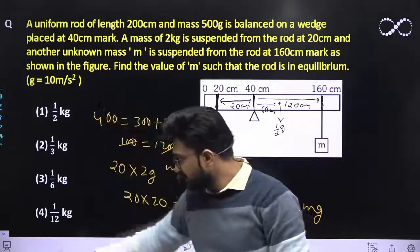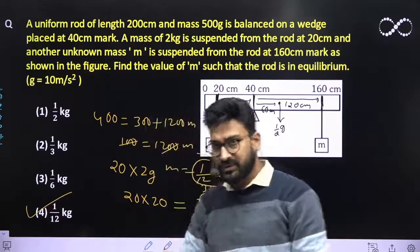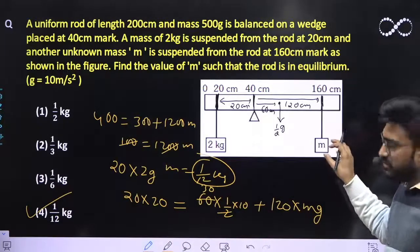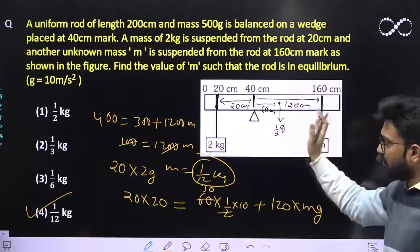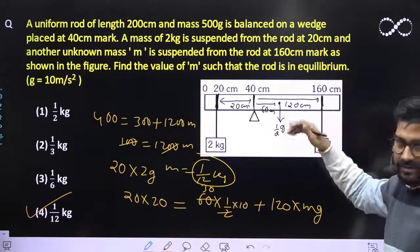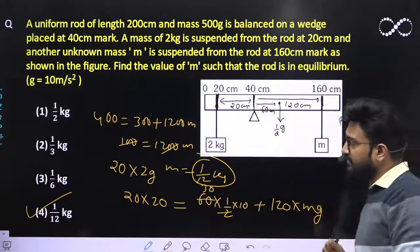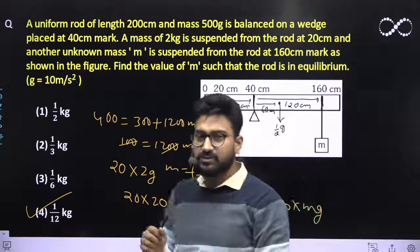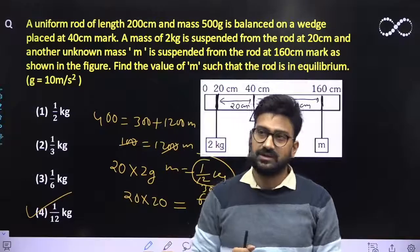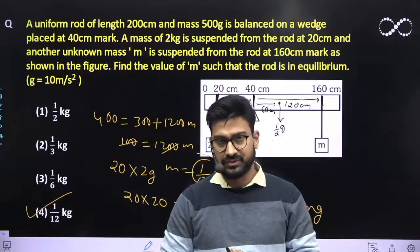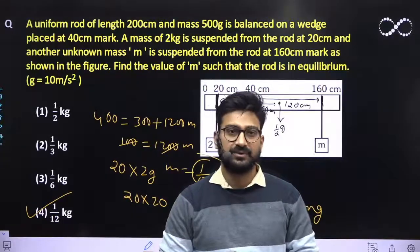So the answer that we are getting is 4th option, which is 1 by 12 kg. This mass must be equal to 1 by 12 kg in order to balance this whole system and have net equilibrium zero, so it should not rotate. This question is quite easier to solve - you need to remember the net torque concept in order to solve this question. I hope this question is clear to everyone. Thank you.